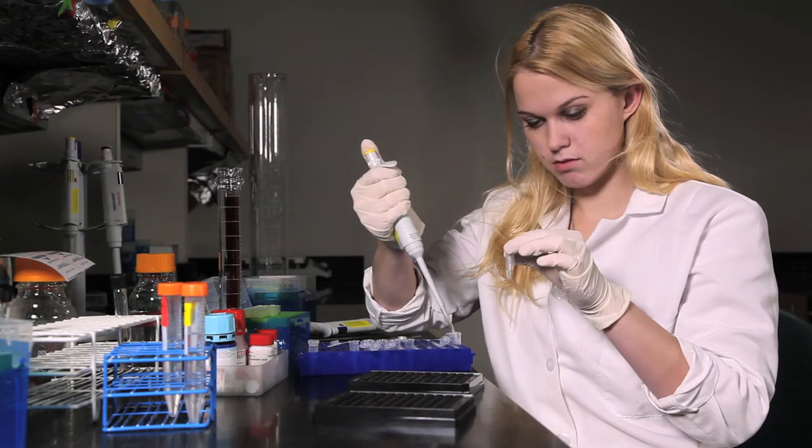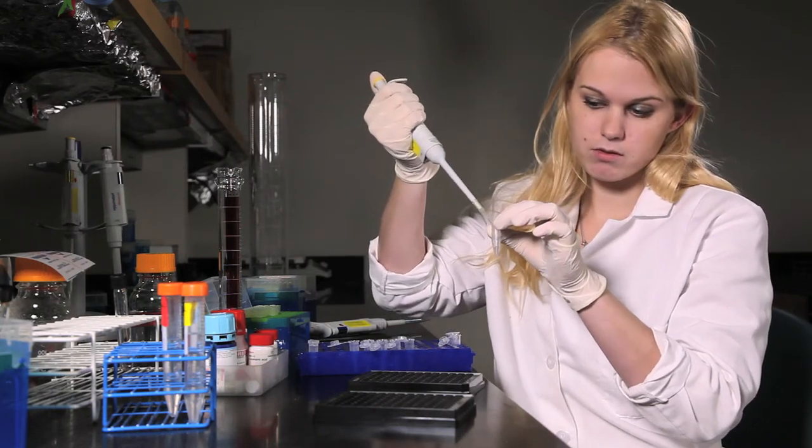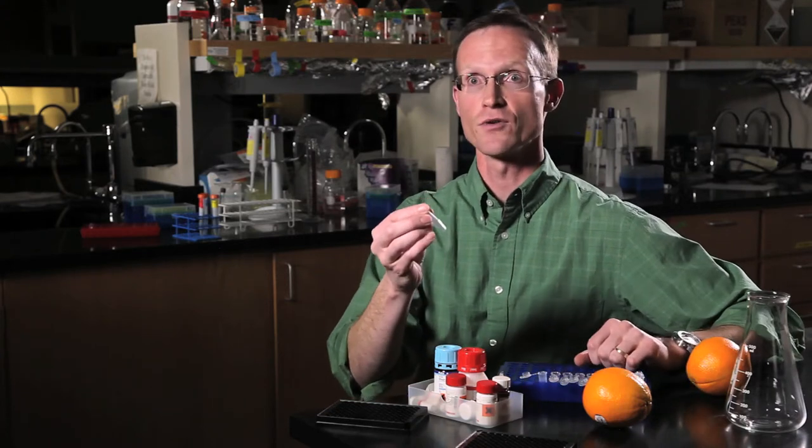Once we purchased the antioxidant compounds, then we create a solution of that in one of these tubes. Once we've done that with several antioxidant compounds, we can then create a mixture of those individual antioxidants into a separate tube that would represent what you would find in an orange.